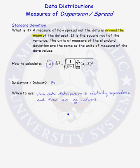I think it's easier to report the standard deviation as your measure of spread rather than the variance, because the units of measure for the standard deviation are the same as the units of measure for your data values.